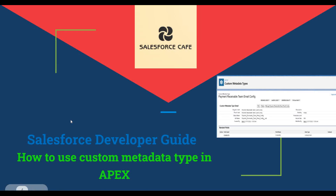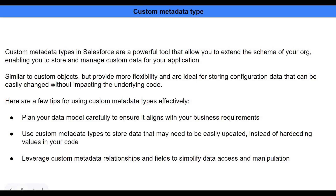In this video we're going to see how to use custom metadata type in your Apex code. Custom metadata is one of the great ways to store configuration data outside of your code — things that commonly or very frequently change. You can manage them using custom metadata. It is more like a custom object, so you can create records and manage all the configuration data using custom metadata type.